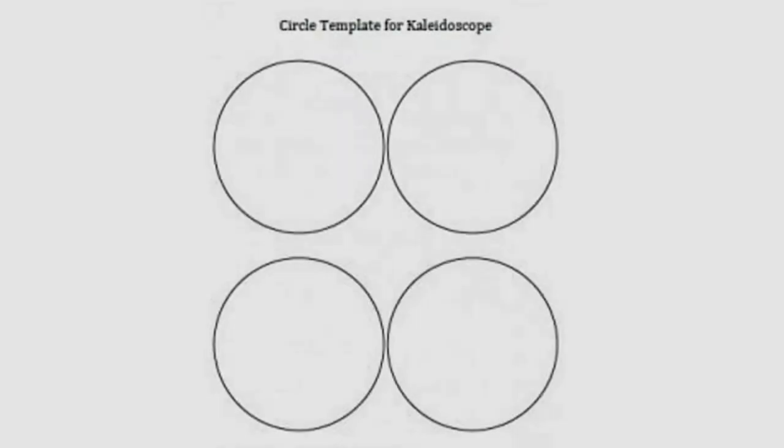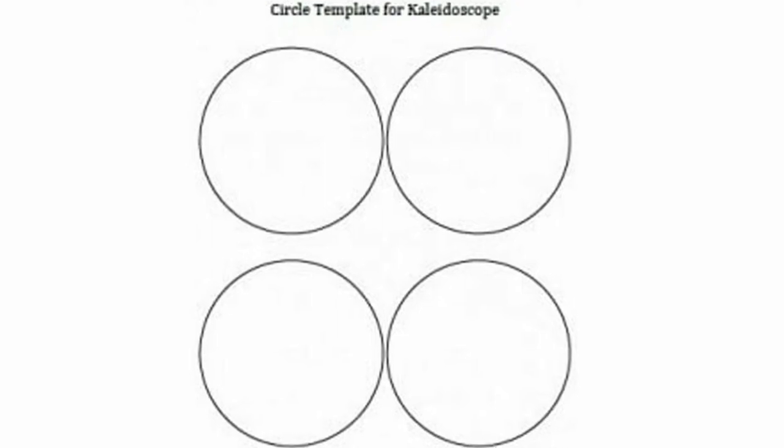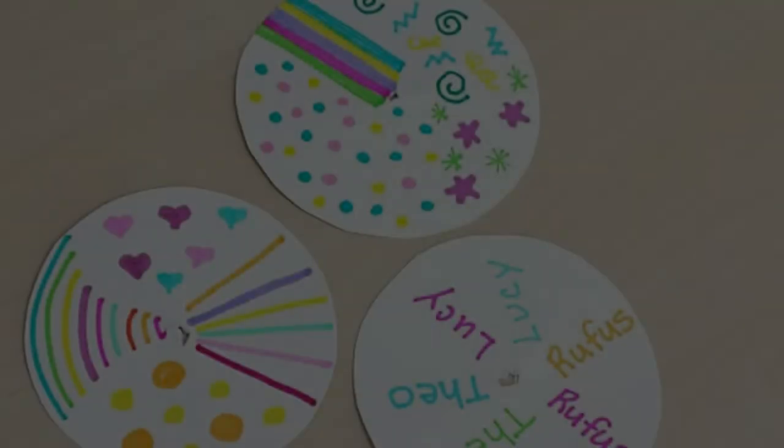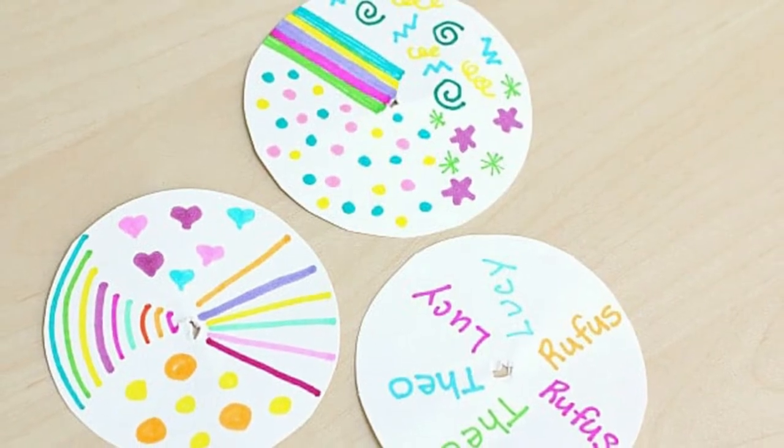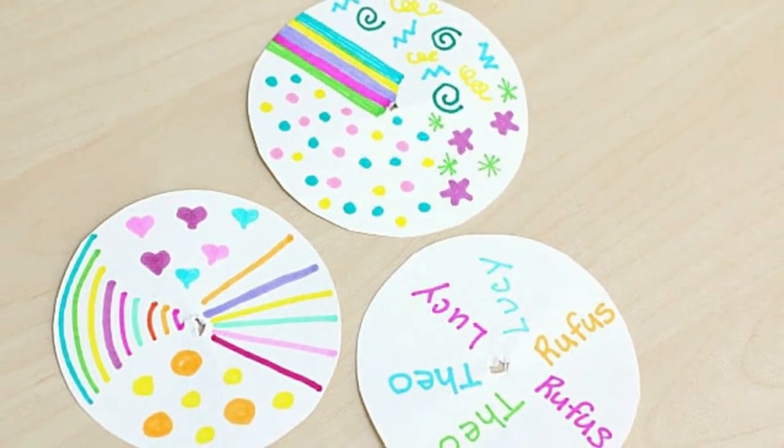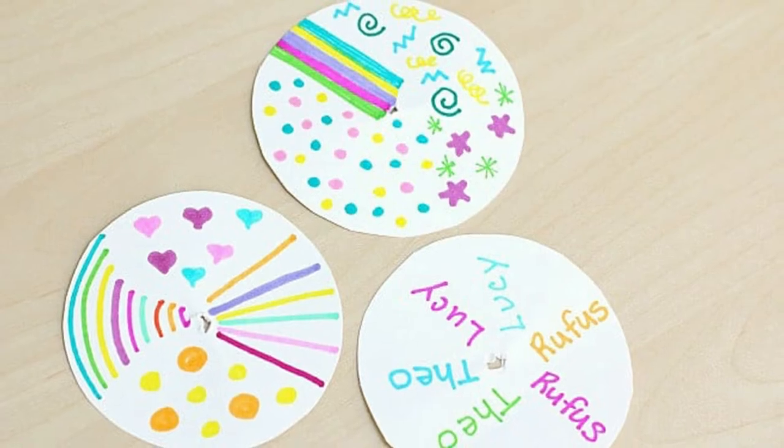Step 8: Cut out three circles from cardstock. Ours measured 3.75 inches in diameter. You can print out our free circle template or just make your own. Step 9: Decorate the circle using markers, stickers, crayons, etc.